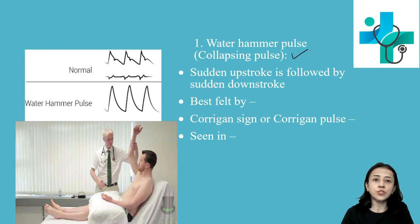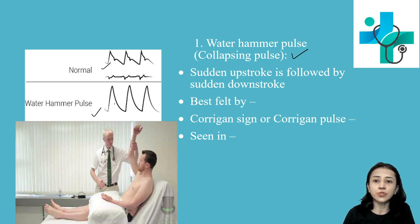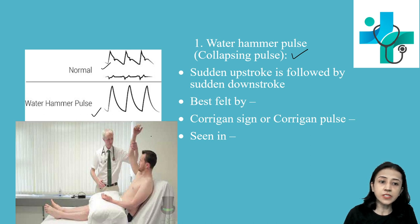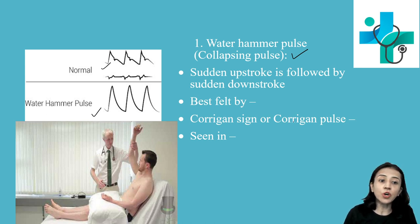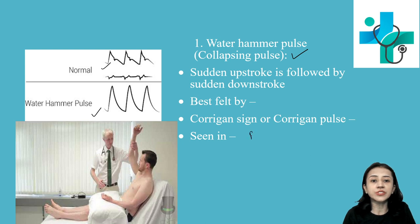First is water hammer pulse, which is also known as collapsing pulse. In water hammer pulse there is a sudden upstroke followed by a sudden downstroke, compared to normal pulse. This is best felt by raising the hand of the patient, and it is also known as Corrigan's sign or Corrigan's pulse. The collapsing character of the pulse is because of regurgitation of blood from the aorta into the left ventricle. So it is commonly found in aortic regurgitation.